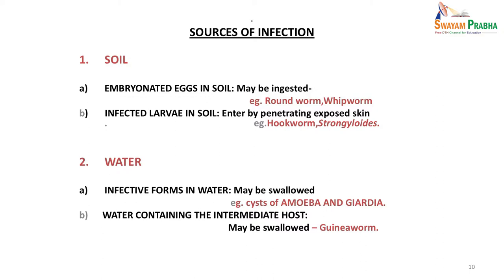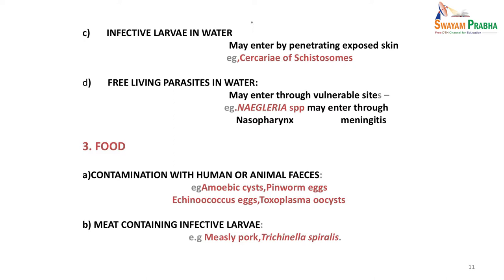Sources of parasitic infection include soil — either embryonated eggs in soil which are ingested through contaminated food, such as roundworm or whipworm eggs, or infected larvae in soil that enter through exposed skin, as with hookworm larvae when walking barefoot. Water is another source — infected cysts of amoeba and Giardia can be swallowed in dirty, unfiltered water, or an intermediate host like the guinea worm can be swallowed. Infected larvae in water can also enter through exposed skin as in schistosomiasis, and some free-living parasites in water can enter through the nasopharynx to cause CNS infection.